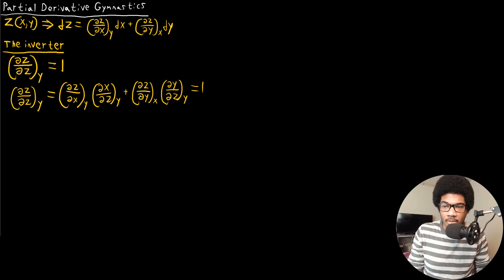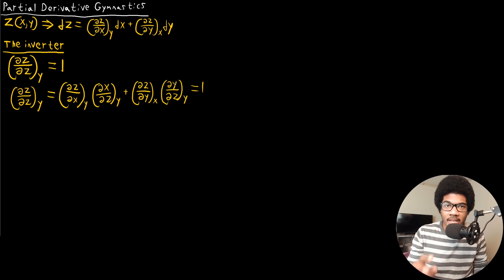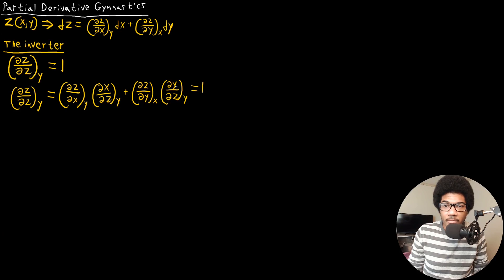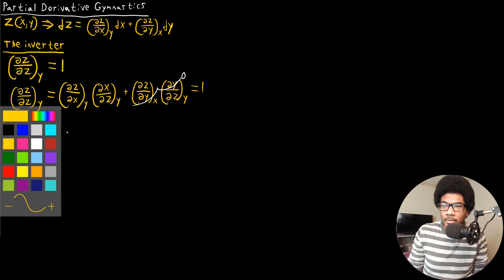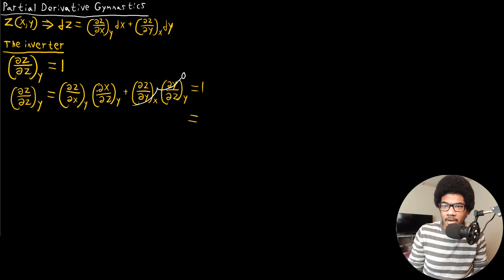Now, in the second term, we're taking the derivative of y at constant y — since y is constant, that derivative is always zero. This goes back to basic calculus: the derivative of a constant is zero. So that second term cancels out, and we're only left with the first term: (∂z/∂x) at constant y times (∂x/∂z) at constant y equals one.